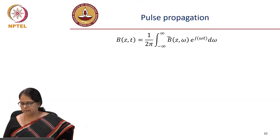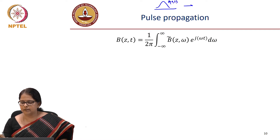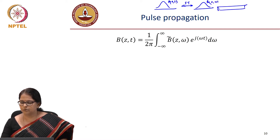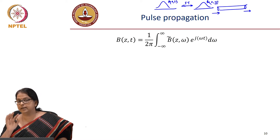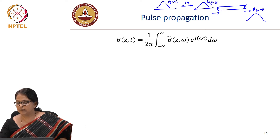This is the pulse propagation. We say that the time domain pulse — remember our approach: we started with the time domain pulse a₀(t), we did a Fourier transform of that, we got b₀(ω) at z equal to 0, that propagated through the fibre. At the end of the fibre you know how each frequency has evolved. You end up with b(z, ω), you do an inverse Fourier transform, and you will get back your time domain.